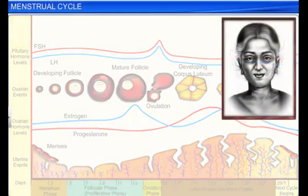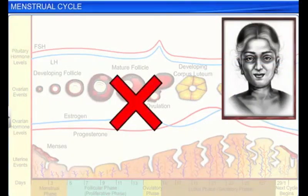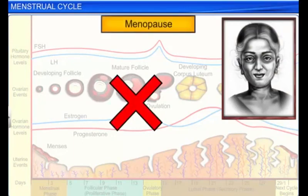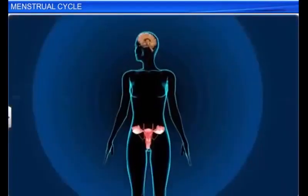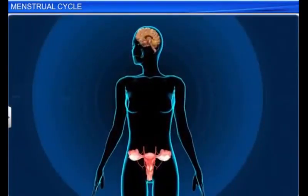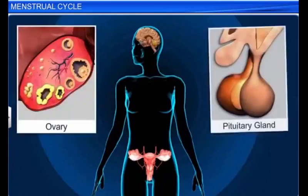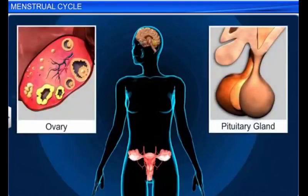Menstrual cycles normally stop once a woman reaches her 50s - this phase is called menopause. The menstrual cycle is an important process in a woman's body, consisting of four phases controlled by hormones released by the ovary and the pituitary gland.